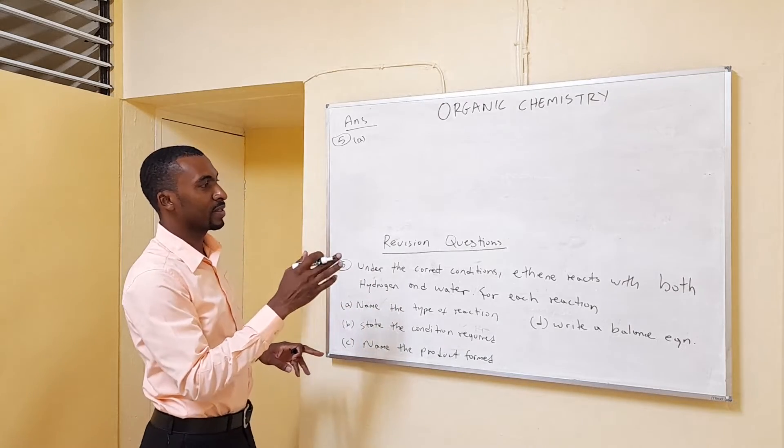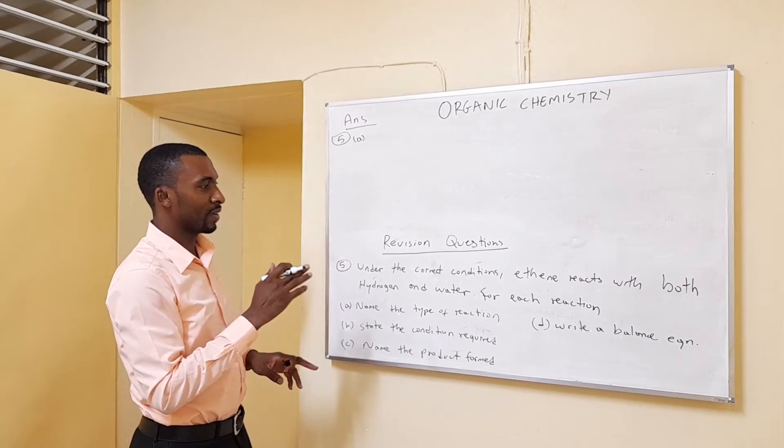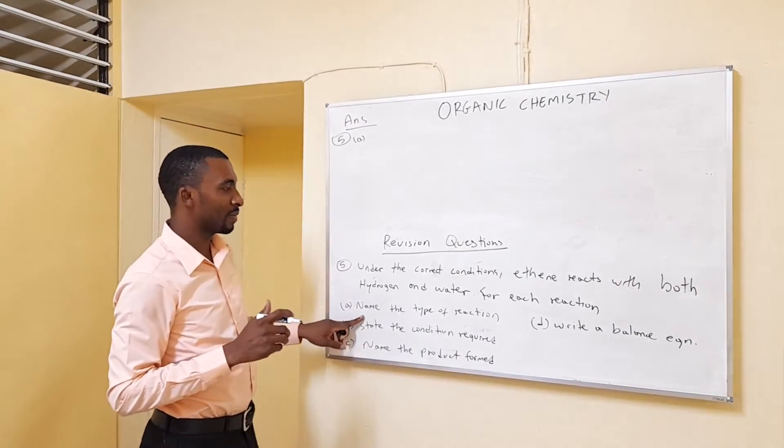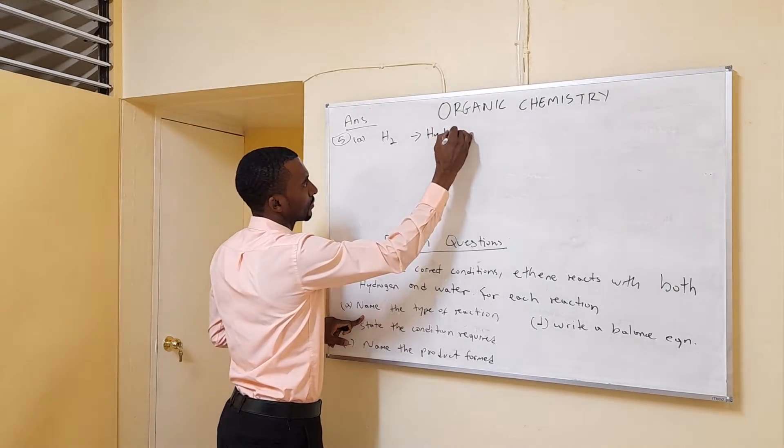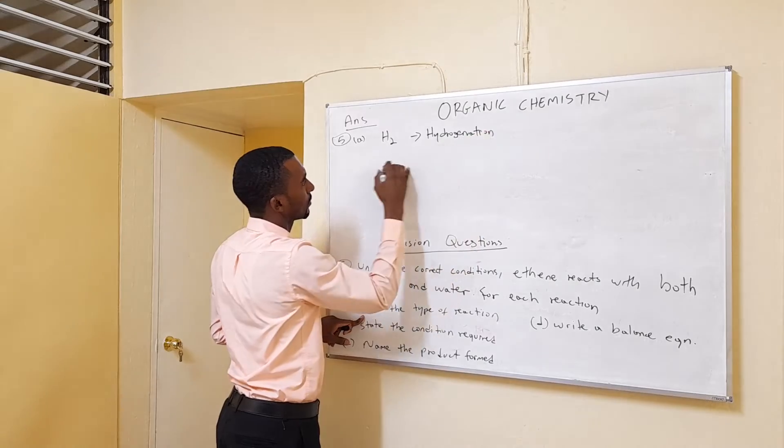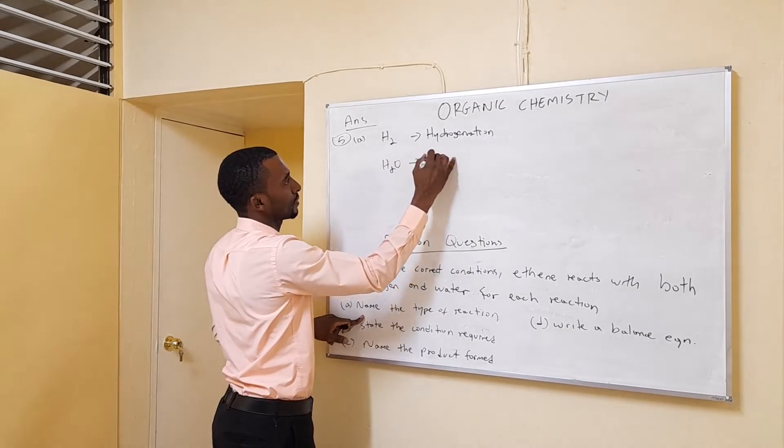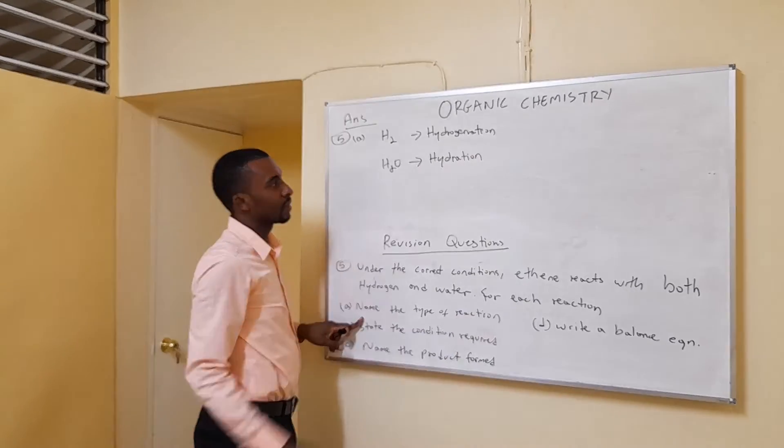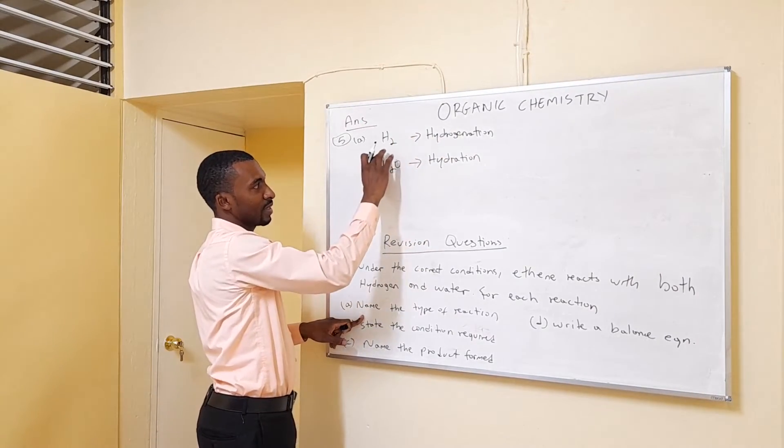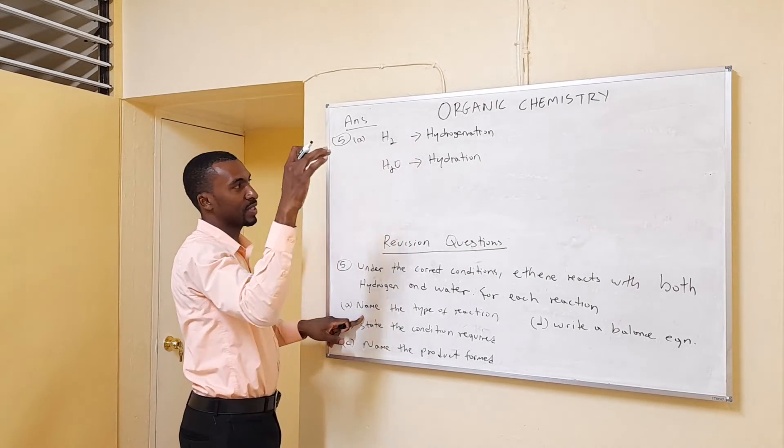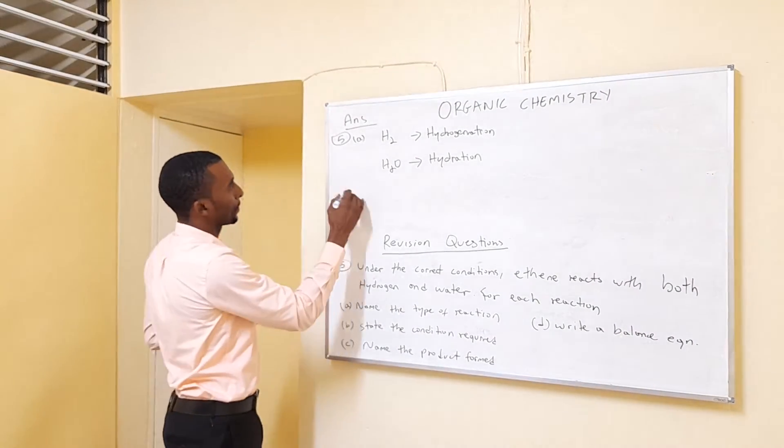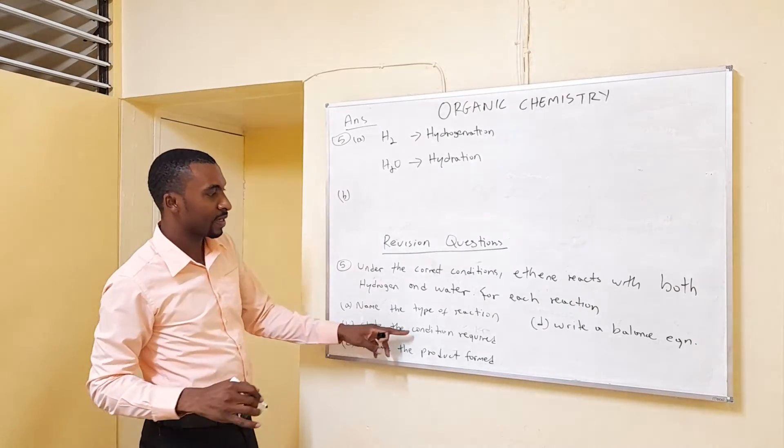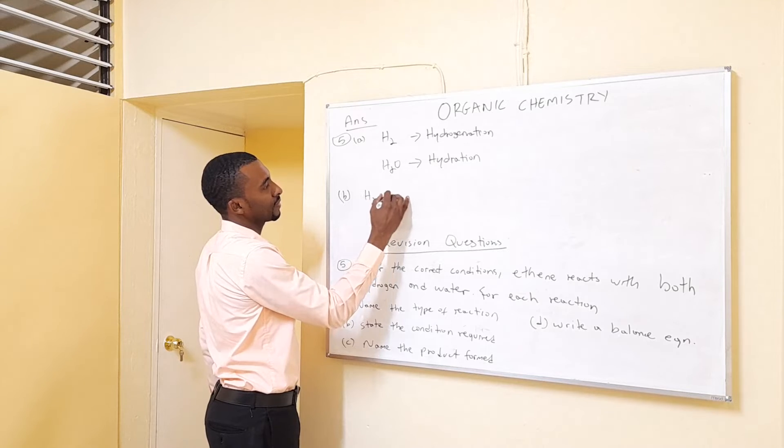Under the correct conditions, ethene reacts with both hydrogen and water. For each reaction, name type of reaction. For hydrogen, it's hydrogenation. For water, it's hydration. This is addition of hydrogen across a double bond. This is addition of water across a double bond. So hydration from water hydrates, and hydrogenation from the hydrogen.